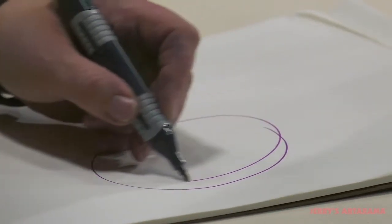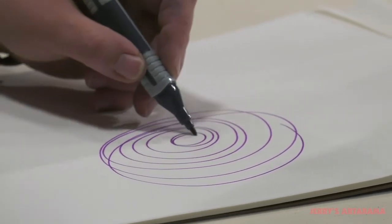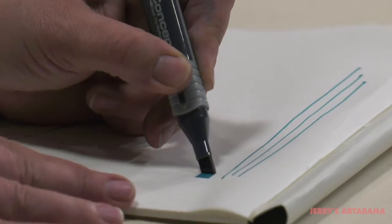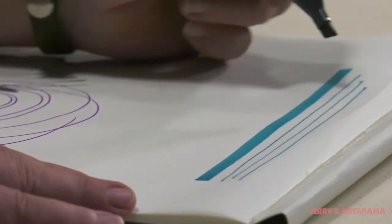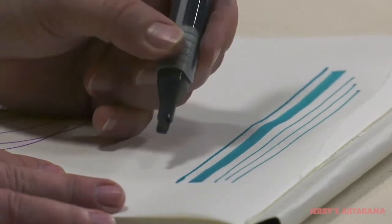The durable nylon tips on the Concept Dual Tip Artist Marker feature a fine bullet nib for detailed sketching on one end and a crisp beveled chisel tip for a variety of mark making capabilities on the other. These tips allow for four different methods of mark making with Concept's high quality permanent alcohol ink.